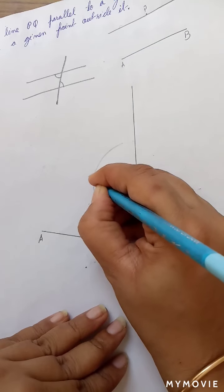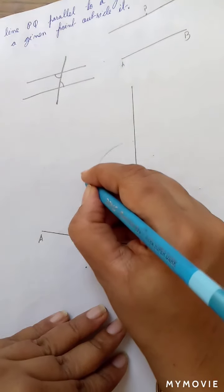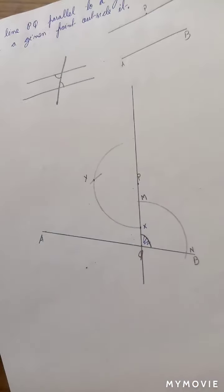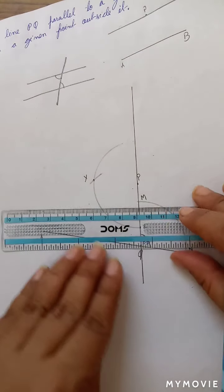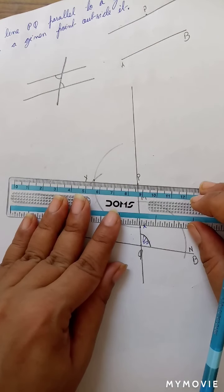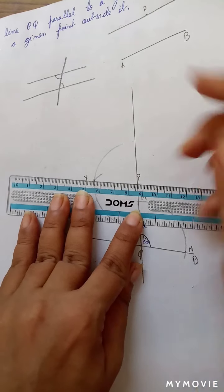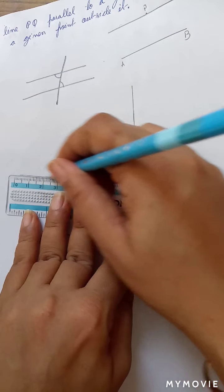Now, we have this point, say, Y. Now, it's simple. We will simply join Y and P. Gently.